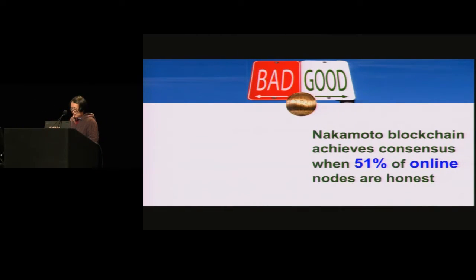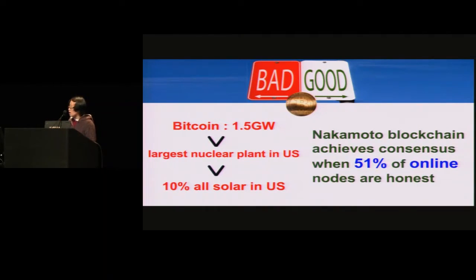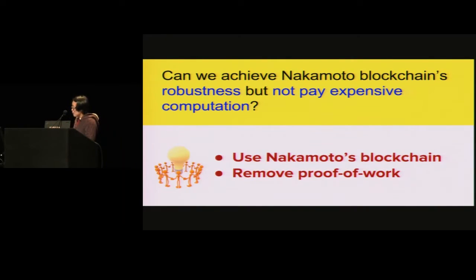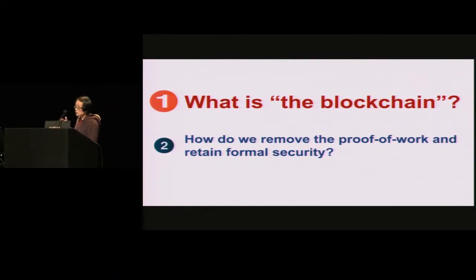The biggest drawback of Bitcoin is that it's enormously wasteful. The electricity consumed by Bitcoin is greater than the largest nuclear plant in the United States, which is more than 10% of all solar power in the United States. So we want to ask: can we achieve the robustness properties of Nakamoto consensus without having to pay the expensive proof of work? Let's take Nakamoto's blockchain and try to remove the proof of work — the challenge is how to do this without breaking security.